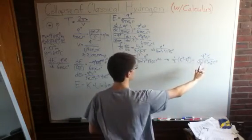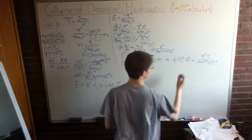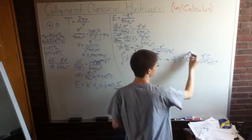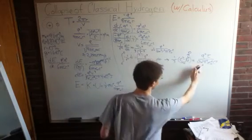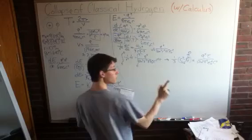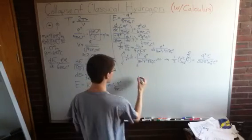And solving for tau, we just multiply by this, divide by q to the 4th. For our final, we know it's going to be 0. And for our initial, it's going to be 10 to the negative 10 meters. And then we can just plug in all the values for that. And this is where we find it. We find the time that it takes the classical atom to collapse.